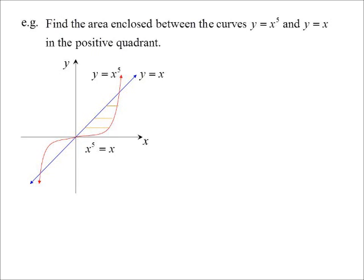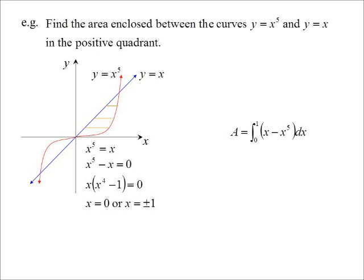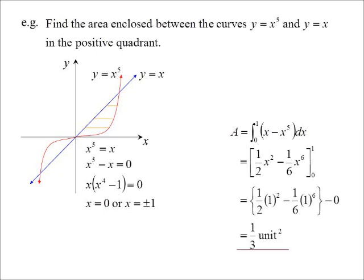I need to find the point of intersection. When does x to the fifth equal x? Rearranging and factorizing gives possible solutions of zero and plus or minus one — we want plus one. So the integral goes from zero to one, subtracting the quintic (x to the power of five) from the linear function. Add one to the power, divide by the power, substitute in — and the answer is one third.